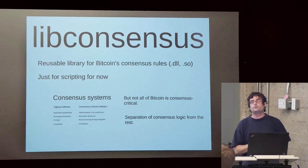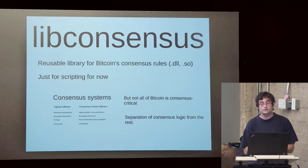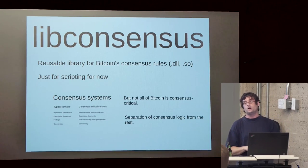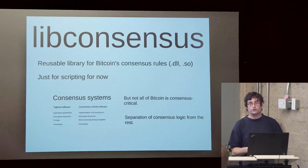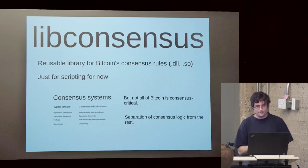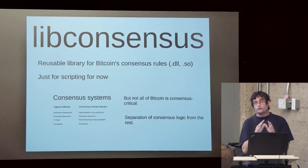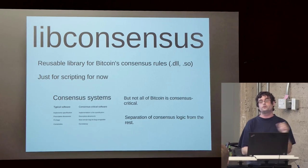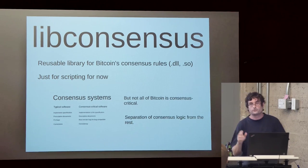The next change is a new library we're shipping with 0.10 releases called libconsensus — a reusable library for Bitcoin's consensus rules. It has a trivial C API, so it should be callable from many other languages if necessary. It's a DLL or SO file. For now it's just scripting: it allows you to evaluate a particular Bitcoin script — here is an input, here is an output script trying to spend it, tell me whether it's valid or not.